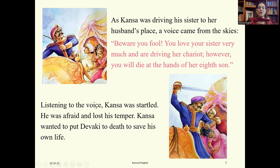Listening to the voice, Kanz was startled. He was afraid and lost his temper. Kanz wanted to put Devaki to death to save his own life, because he thought that if he killed Devaki there would be no children and no one would kill him.